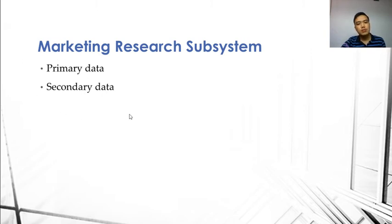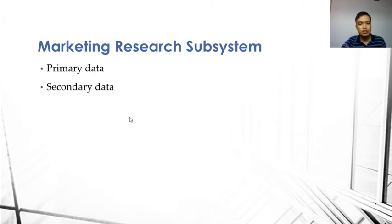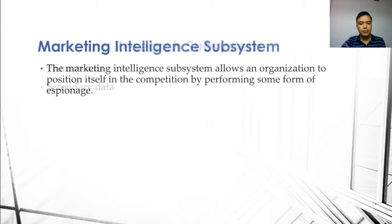On the other hand, data gathered by someone else outside of the organization are called secondary data. For instance, an organization may not have enough resources to survey how many men and women in the area wear denims, so the services of another organization that specializes in such surveys may be tapped to perform the survey.